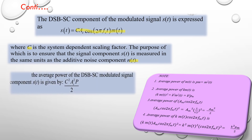The average power of the DSBSC modulated signal component s(t) is given by C² × A_c² × P / 2. Some useful relations for average power: first, the average power of m(t) is P_m = m²(t). Second, the average power of k × m(t), where k is a constant factor, is k² × P_m.